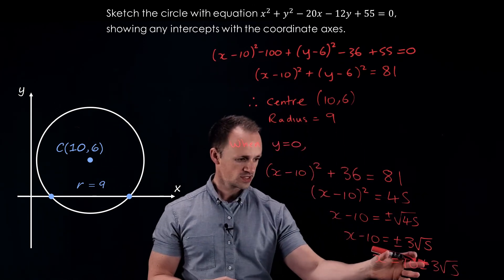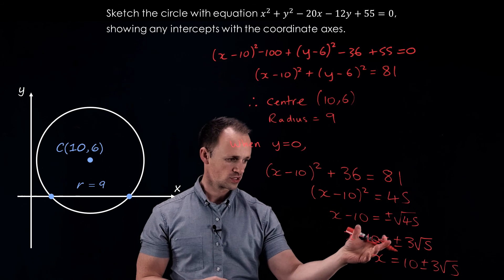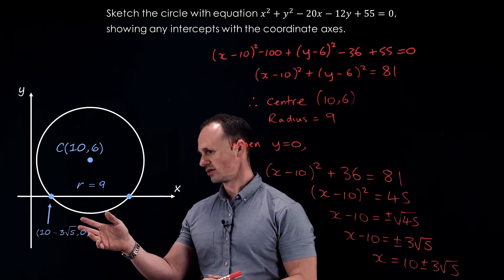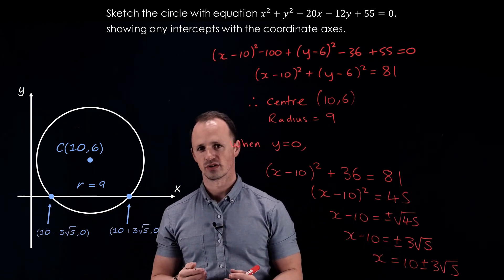This tells me the points where it's going to cross the x-axis are 10 minus 3 root 5 and 10 plus 3 root 5.